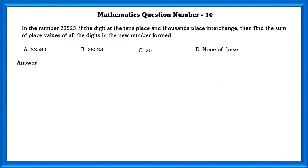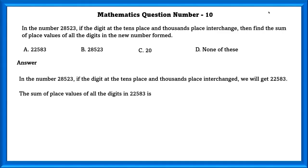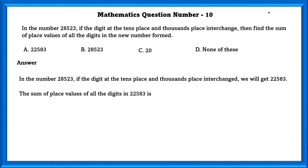Mathematics question number 10. In the number 28523, the digits at the tens place and thousands place are interchanged. Find the sum of place values of all the digits in the new number formed. Interchanging the tens and thousands place digits gives 22583. The sum of these place values equals 22583.